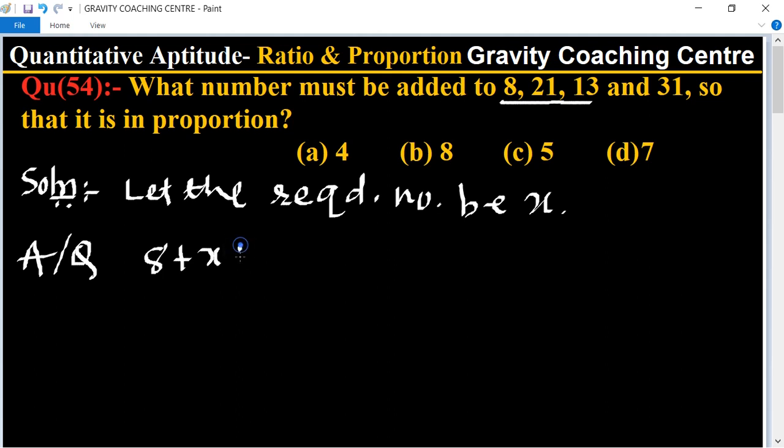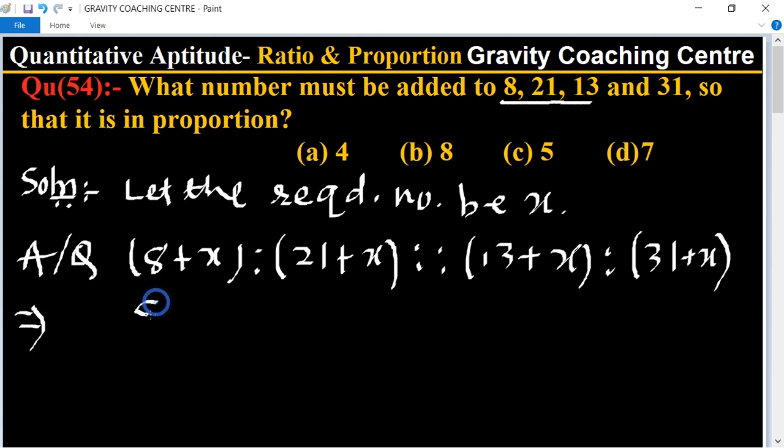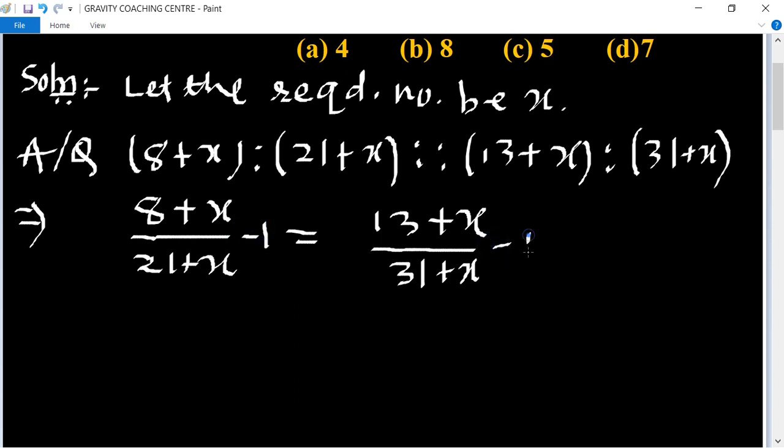ratio 21 plus x is as 13 plus x ratio 31 plus x. This implies that 8 plus x upon 21 plus x equals 13 plus x upon 31 plus x.